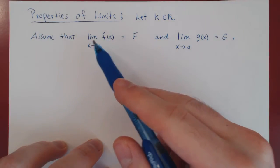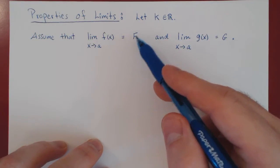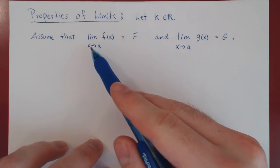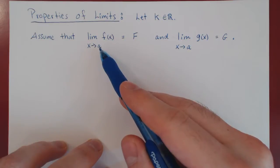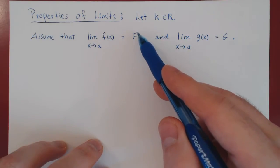And we assume that the limit of f of x as x approaches a is equal to uppercase F, which means as we've said before, as x is getting closer and closer to a, f of x is getting closer and closer to this fixed value.